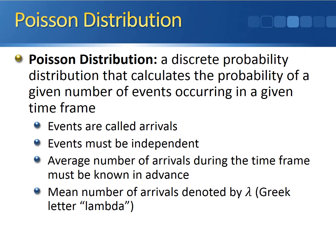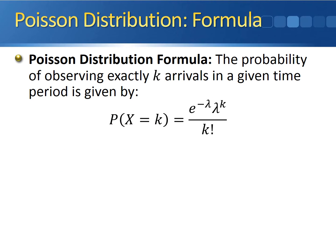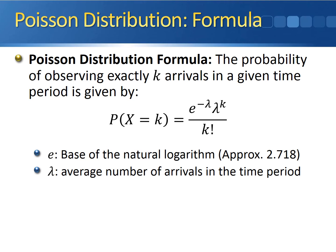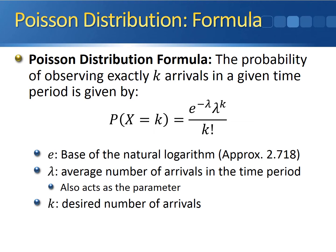The mean number of arrivals is denoted by the Greek letter lambda. The probability of observing exactly k arrivals in a given time period is given by this equation: e to the negative lambda, times lambda to the k power, divided by k factorial. Here, e is the base of the natural logarithm, approximately equal to 2.718. Lambda is the average number of arrivals in the time period and also serves as the parameter for the Poisson distribution. k is the desired number of arrivals you wish to see in the given period of time.